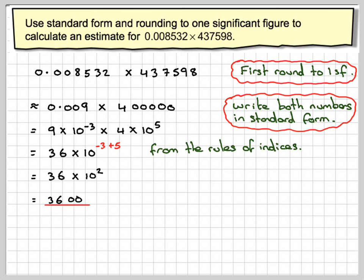So it will give me a final answer for an estimation of this sum of 3,600. If we look at the actual answer, it is 3,733.586. So it's a reasonable estimate.